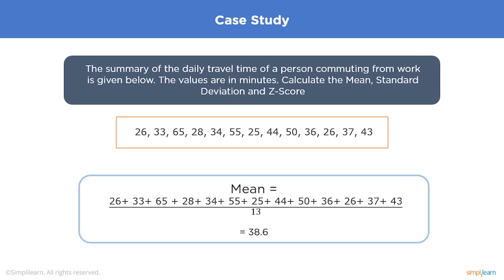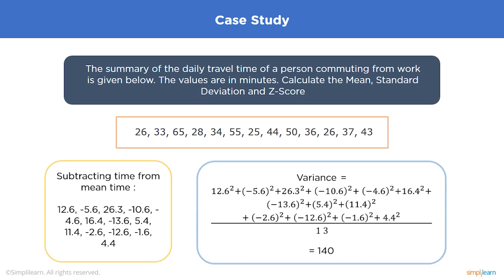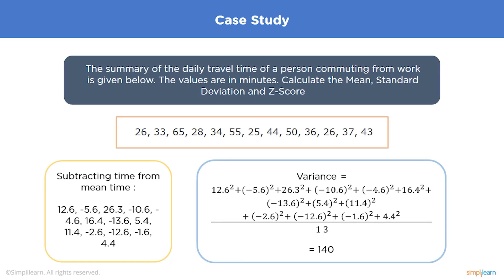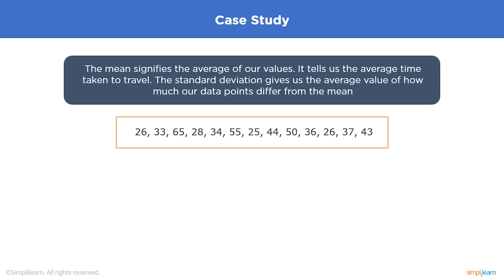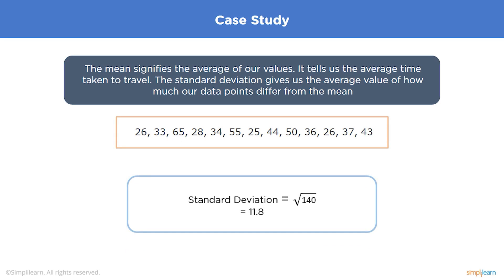Next, subtract each individual value from the mean to calculate variance and standard deviation. The variance is calculated by squaring all differences, adding them up, and dividing by the total number of values, giving a variance of 140. Taking the square root gives a standard deviation of 11.8. This means that on average, a single data point is about 11.8 minutes away from the mean.